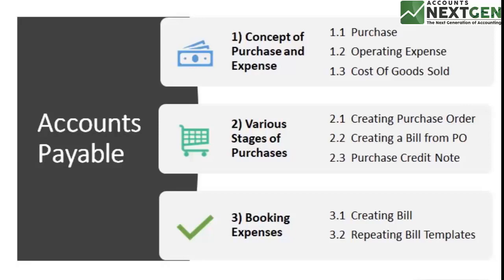There can be scenarios where you need to return some purchases, so it's going to be the credit notes which you need to issue for that purchase in the books. Then we'll talk further about bookkeeping expenses. Basically, there's a part when we do the inventory and we manufacture things, we procure things — that is a part where we talk about the various purchase stages.